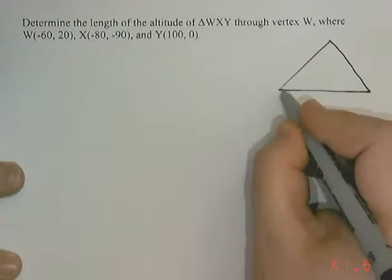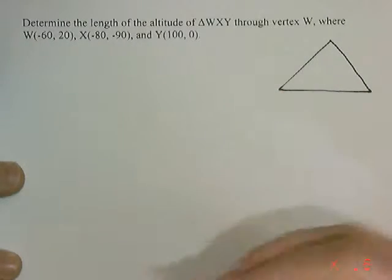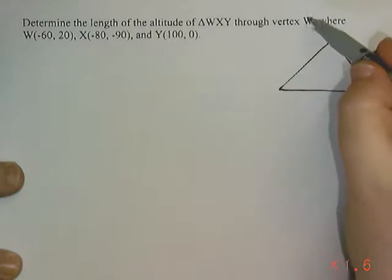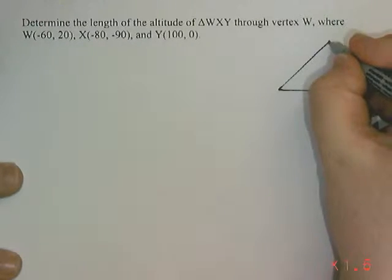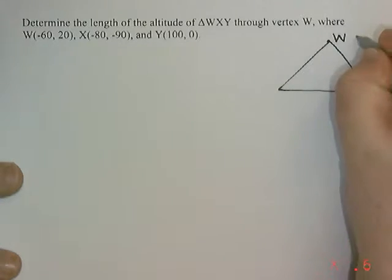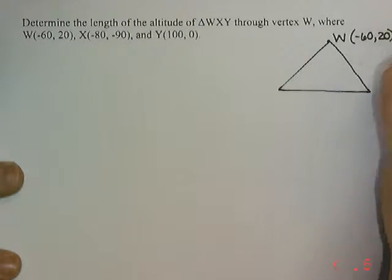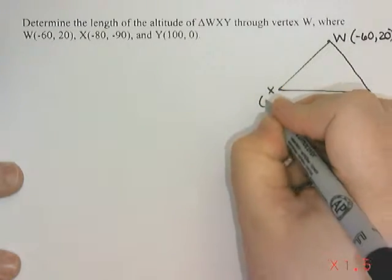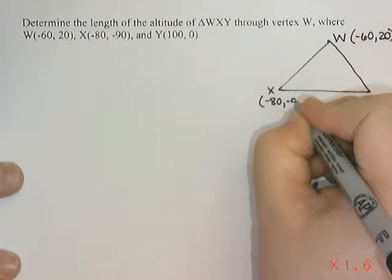So it's not to scale, and then I'm just going to label W, X, Y. It does say it has to go through vertex W, so I think I'm going to put that one at the top just to make this easier for me. And then I'm just going to do X and Y.